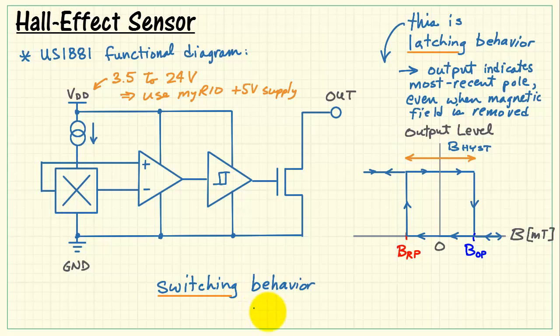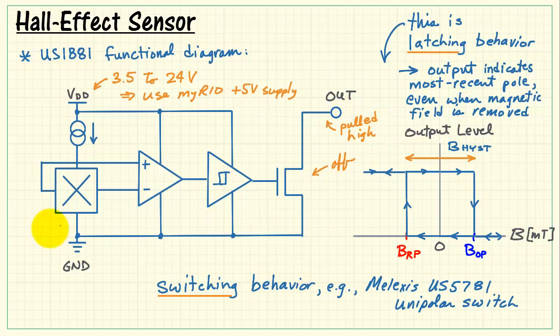In contrast, other hall sensors have switching behavior. For example, the US5781 is like that. In this case, the transistor is off and the output would be pulled high when there is no magnetic field applied. We then apply a field such as a south pole. The transistor turns on and that tugs the output low. When you remove the magnetic field, the transistor switches off again and the output is pulled high.